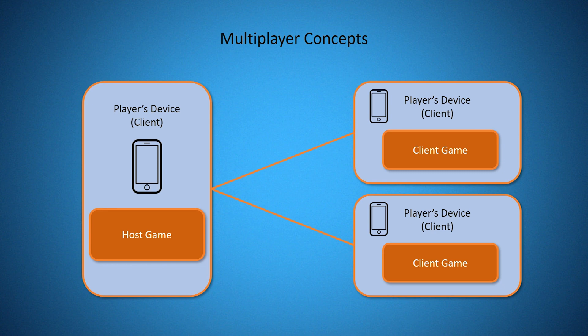Now let's talk more about how a multiplayer game works. With regards to the Unity networking service and the Photon plugin, once you establish a connection between the host and the clients, there are components and scripts which help you synchronize your game across the network. In Unity, these include the Network Identity component and the Network Transform component, among others. In the Photon plugin, they use what's called a Photon View to synchronize things such as game objects, transforms, and variables.